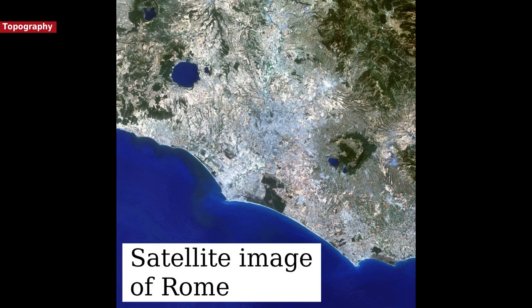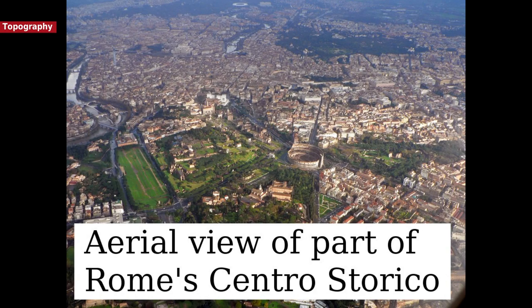Throughout the history of Rome, the urban limits of the city were considered to be the area within the city's walls. Originally, these consisted of the Servian Wall, which was built 12 years after the Gaulish sack of the city in 390 BC. This contained most of the Esquiline and Caelian Hills, as well as the whole of the other five. Rome outgrew the Servian Wall, but no more walls were constructed until almost 700 years later, when in 270 AD Emperor Aurelian began building the Aurelian Walls.